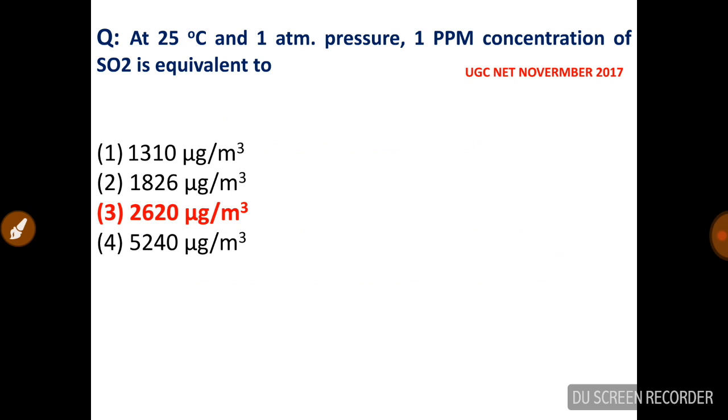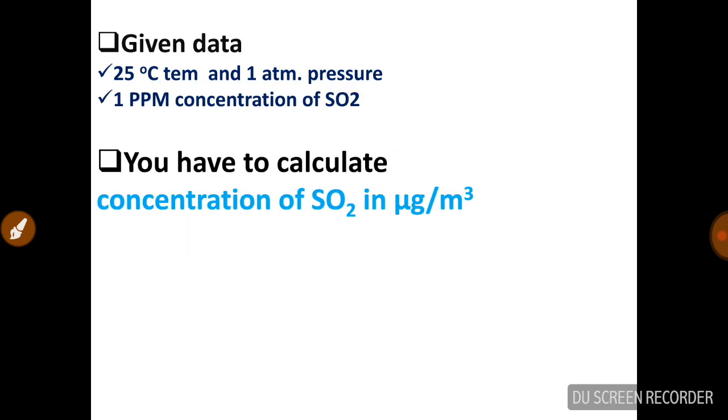In this question, given data is the concentration of SO2 in PPM at 25 degree Celsius temperature and 1 atmospheric pressure. And we have to calculate the concentration of SO2 in microgram per meter cube.